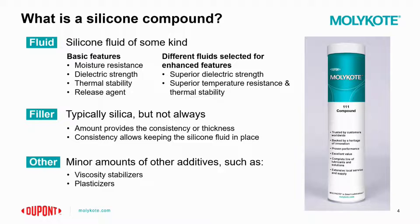On the fluid side, with it being a silicone compound, you're going to expect some type of silicone fluid. The fluid is really there to deliver moisture resistance, dielectric strength, thermal stability, and release agent type characteristics. You can use different types of fluids from the silicone family to get different properties — superior dielectric strength, increased temperature windows, or greater thermal stability. There are trade-offs, sometimes in cost or reduced strengths in other areas, and that's all part of the formulation.